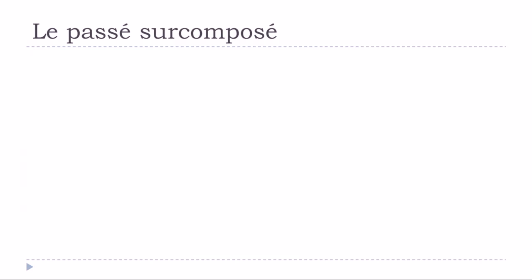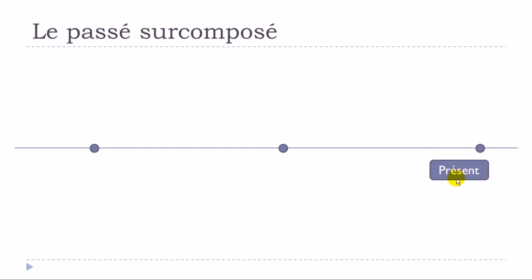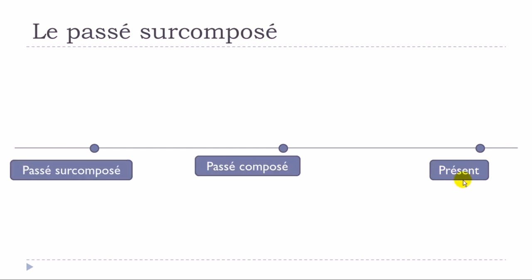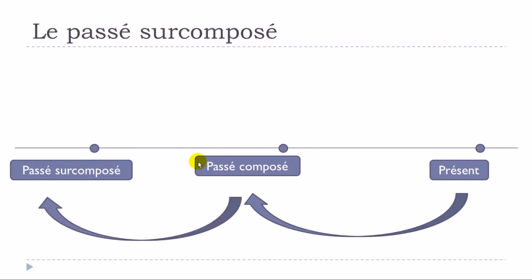Let's see the timeline. Imagine this is the present — le présent — and then we want to express something in the past, so we use le passé composé. And if you want to express something that happened even before that passé composé event, that's le passé surcomposé. So: le présent, then le passé composé, and even further back, le passé surcomposé.